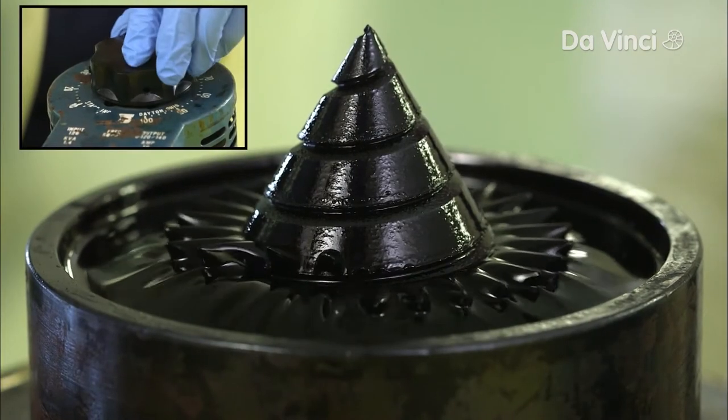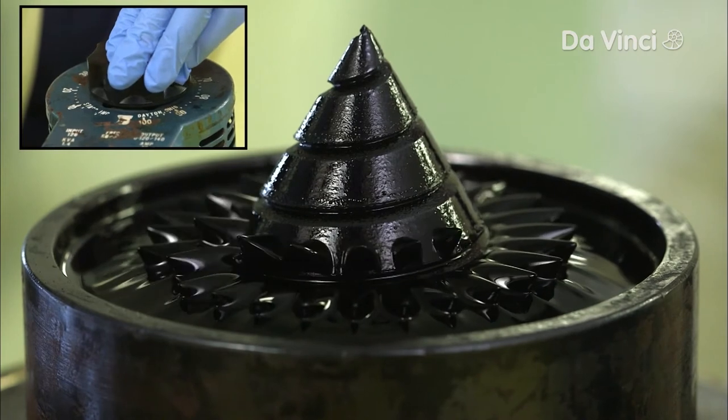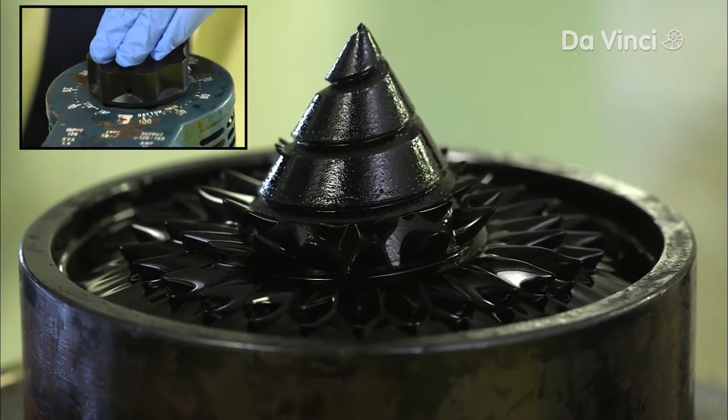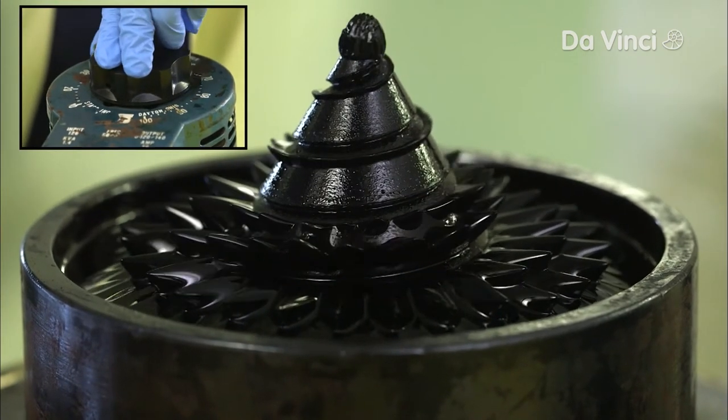Changing the current going to the spiral in the middle turns it into a magnet. The more current I put in, the stronger that magnet becomes, allowing the ferrofluid to climb the spiral to the top.